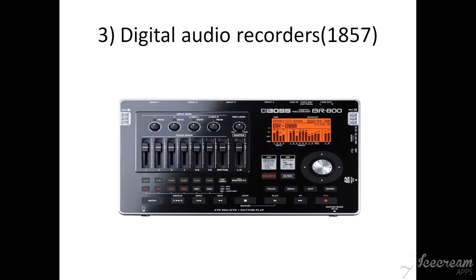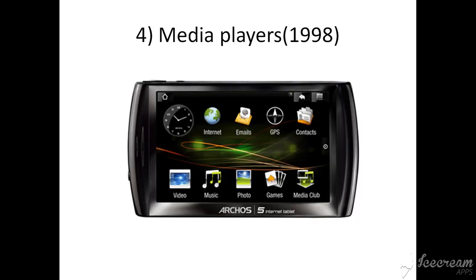The third type is digital audio recorders, introduced in 1857. In the context of audio, analog refers to the method of representing a sound wave with voltage fluctuations analogous to the pressure fluctuations of the sound wave. Analog fluctuations are infinitely varying, rather than the discrete changes at sample time associated with digital recording.